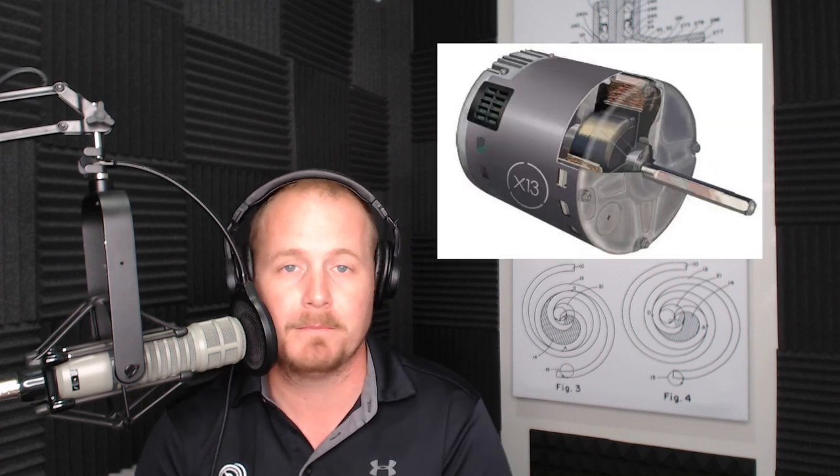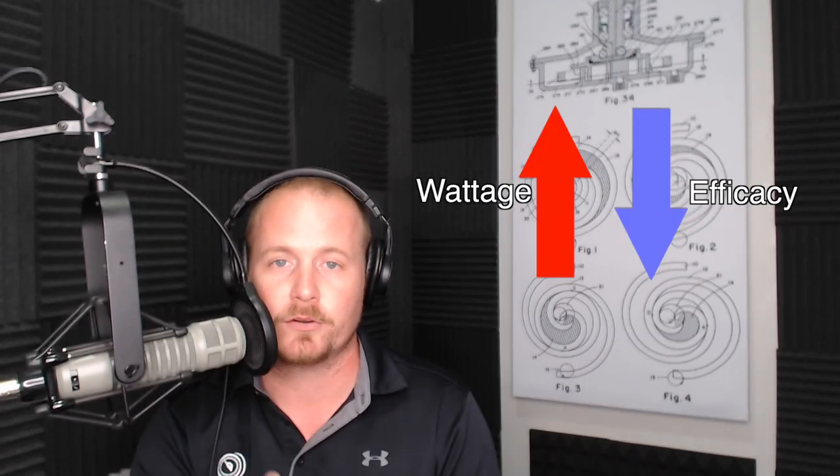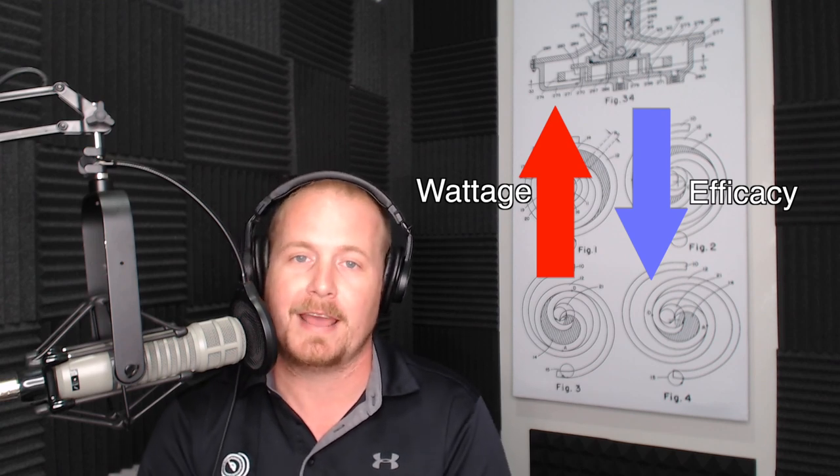In both the case of PSC (permanent split capacitor) and ECM (electronically commutated) motors, when that blower wheel gets dirtier or that evaporator coil gets dirtier, in both cases it's going to affect the efficacy of that motor. For ECM motors, as the motor attempts to maintain constant torque or airflow output and becomes more restrictive, it ramps up and produces the same airflow at the cost of higher wattage. So as wattage increases to do the same amount of work, fan efficacy decreases. It tells you how hard the unit is working from a wattage standpoint to produce the desired CFM.